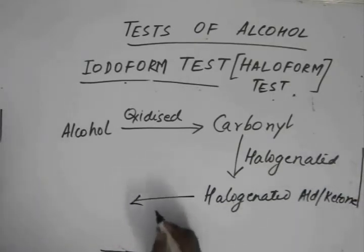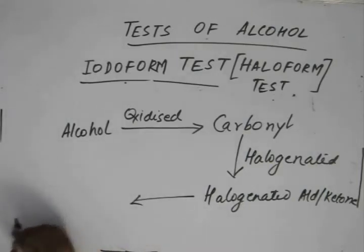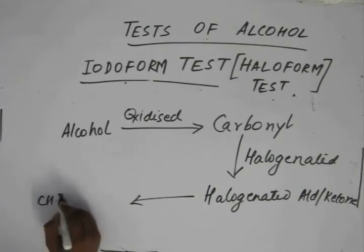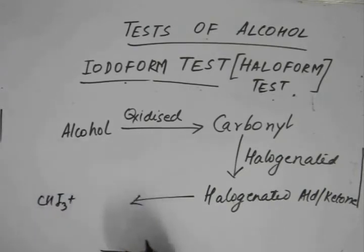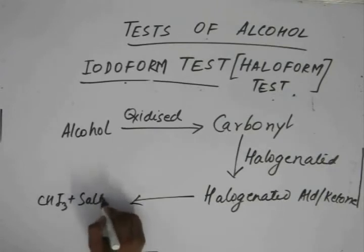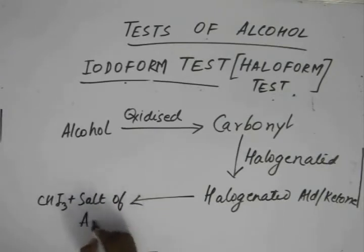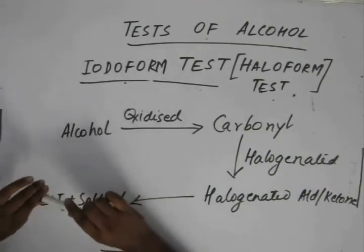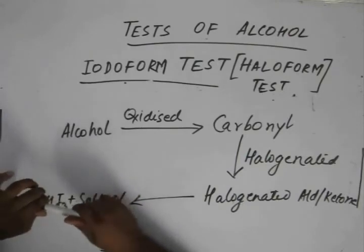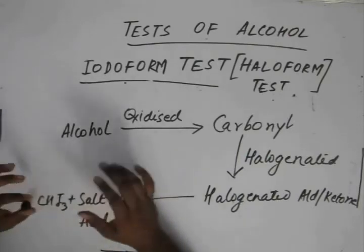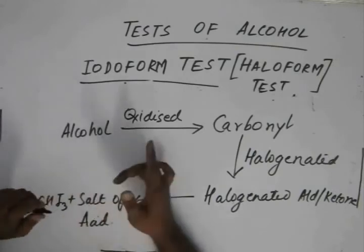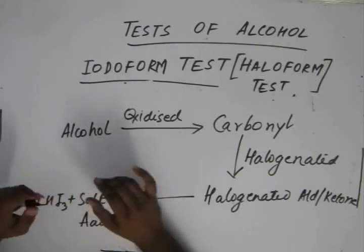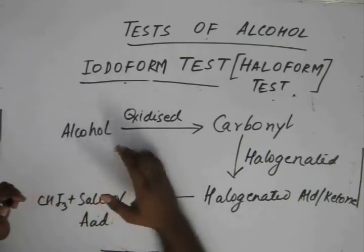When this halogenated compound reacts with the base, we get CHI3 and the salt of the acid. Let me tell you the basic fundamental factor that drives the iodiform test.